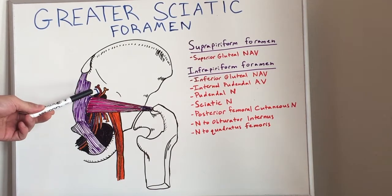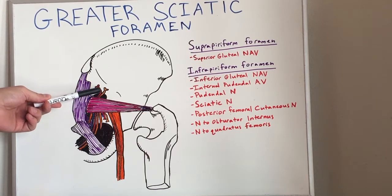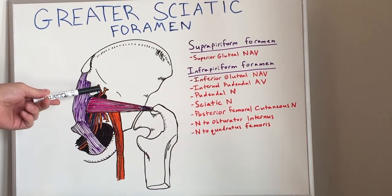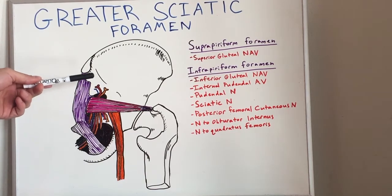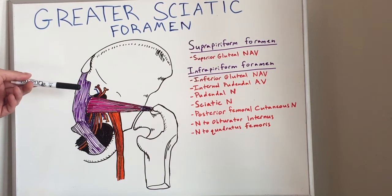we have the superior gluteal nerve, artery, and vein, shown here in orange, red, and blue respectively. All three of these innervate the gluteus medius, the gluteus minimus, as well as the tensor fascia latae muscle.